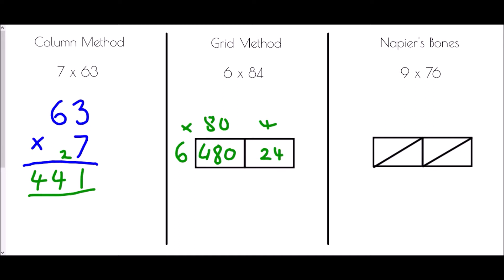The final stage in this method is to add those two answers together. So 480 and 24 need adding: 0 plus 4 is 4, 8 plus 2 is 10, so I carry over, and 4 plus 0 plus the 1 is 5. So 6 times 84 is 504.